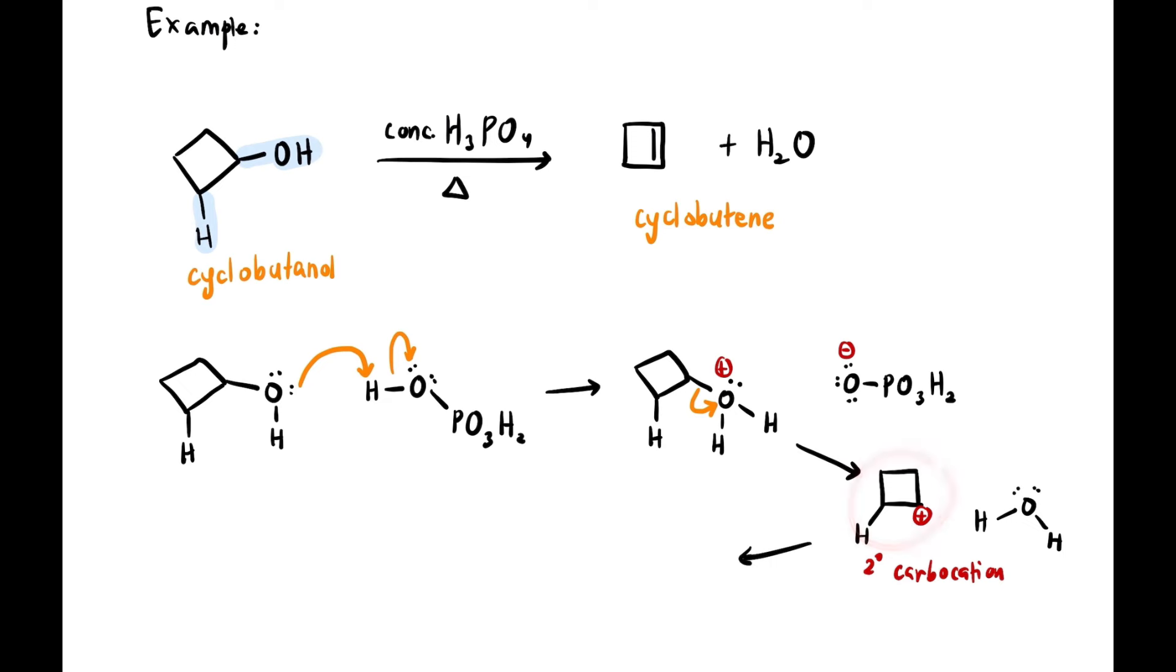Moving on, the last step is that the OPO with negative charge will come back to attack the carbocation to form the alkene we've been aiming for. As usual, it will not go directly to the plus - it cannot, cannot. So where will it go? It will go to the adjacent hydrogen so that it can make a double bond.